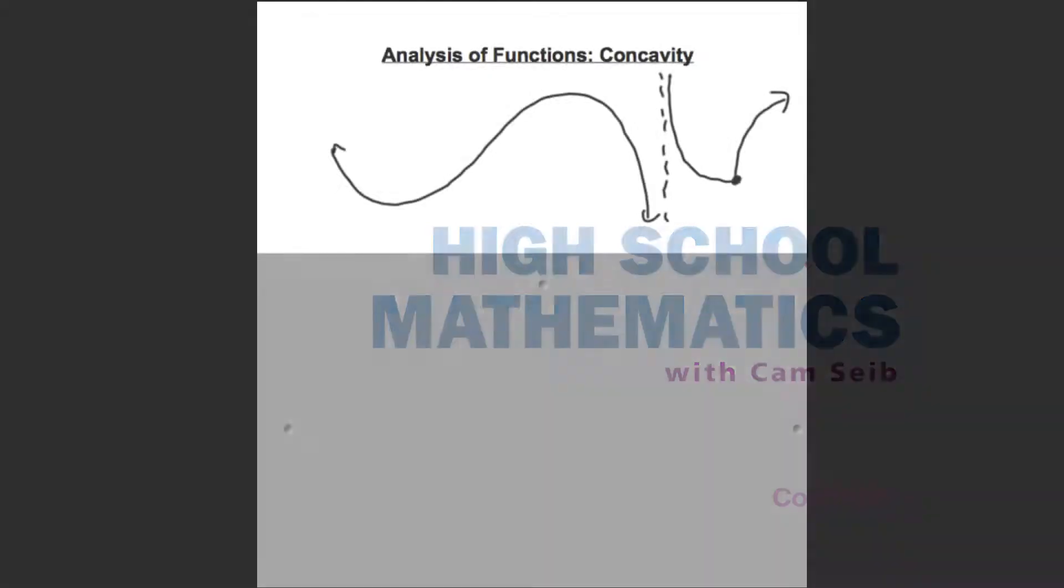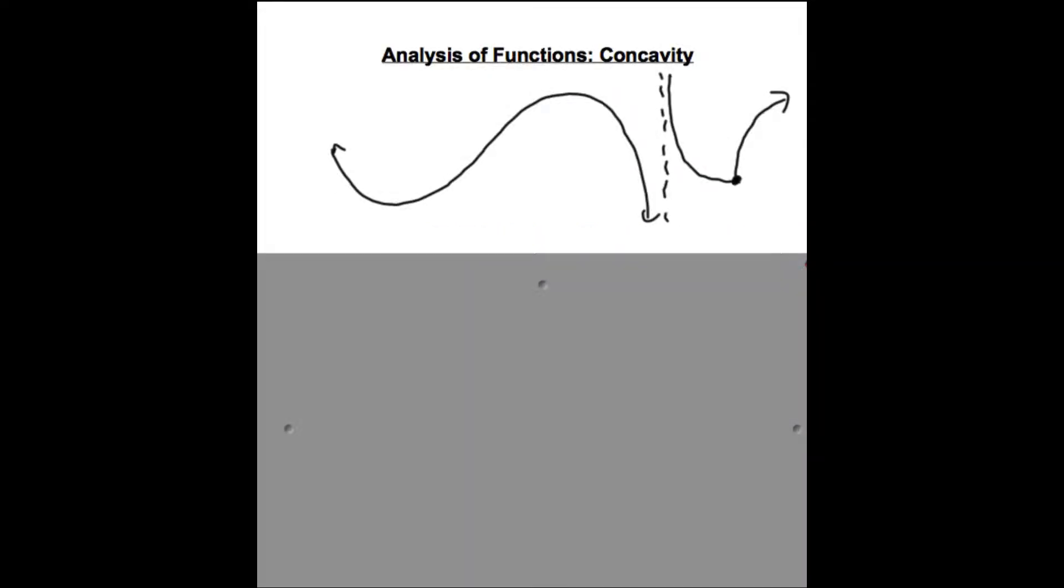Our next concept is concavity, and concavity has to do with whether the graph sort of bends in or bends out. So this would be considered concave up right here, this would be considered concave down.